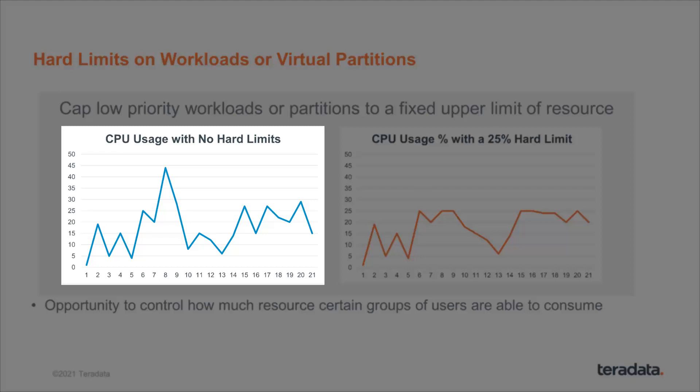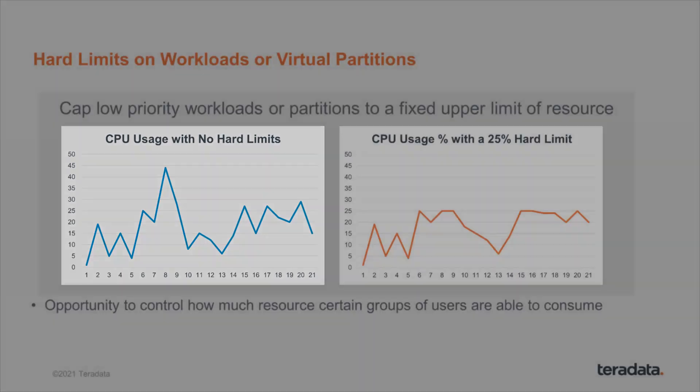In this example, we've got a workload that's sometimes using a lot, averaging about 20%, sometimes using less, and we want to limit it to no more than 25% at any point in time.